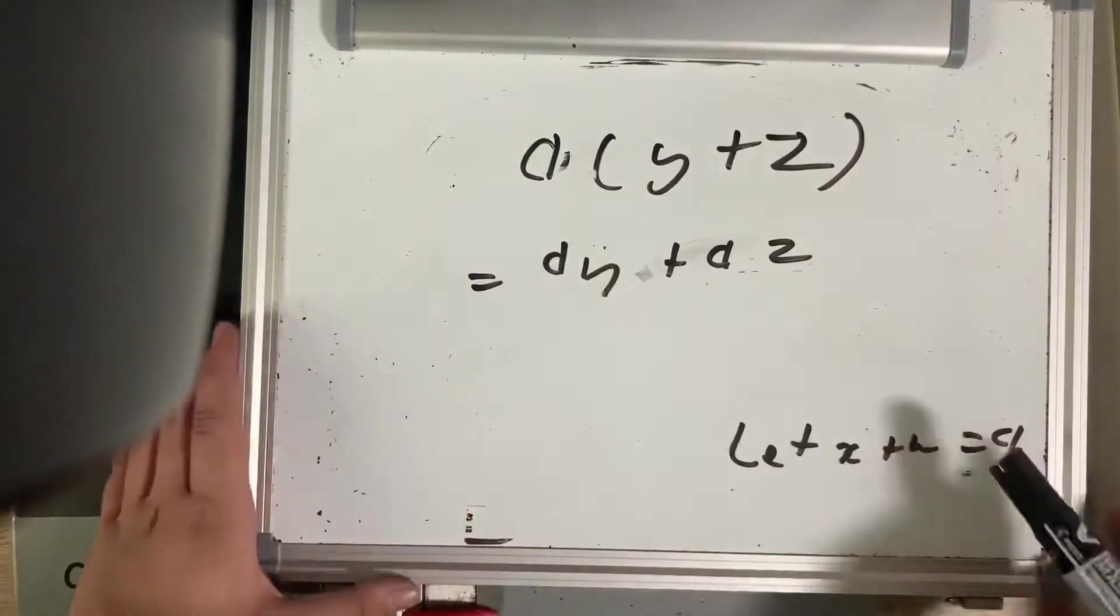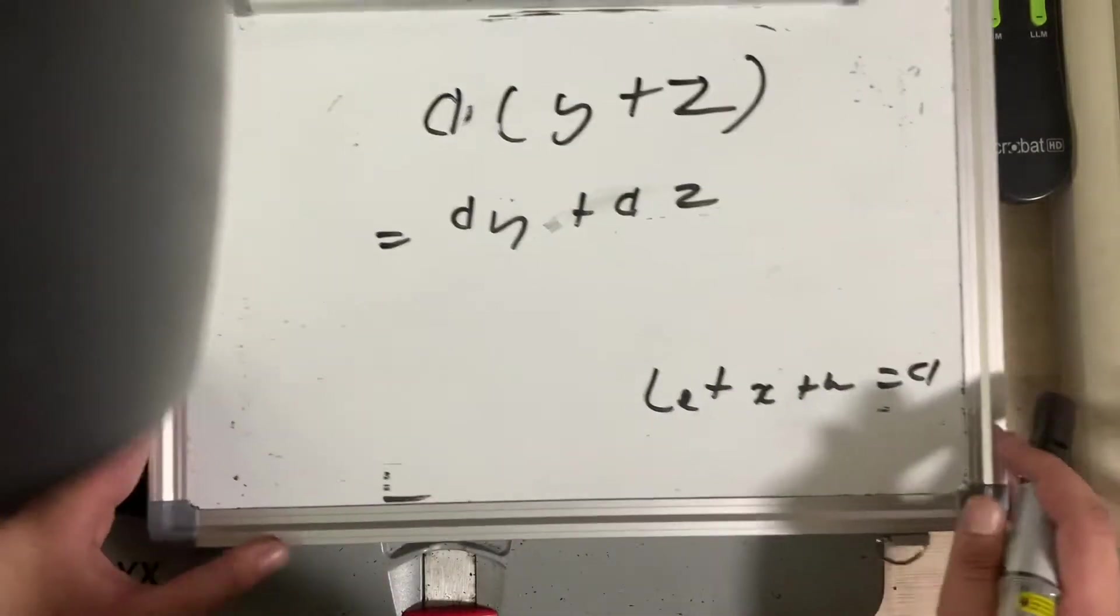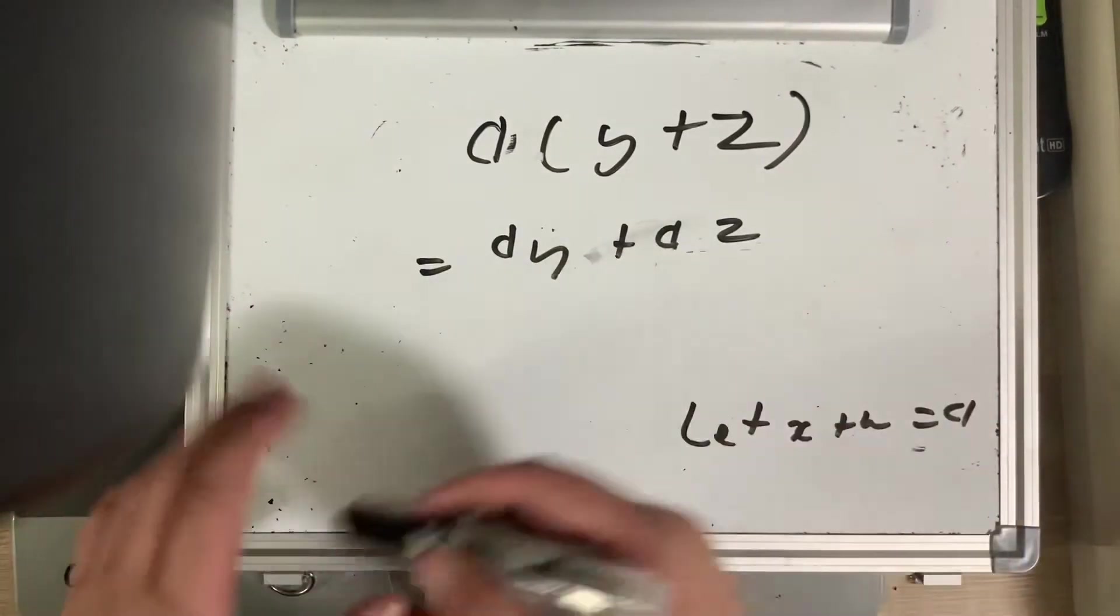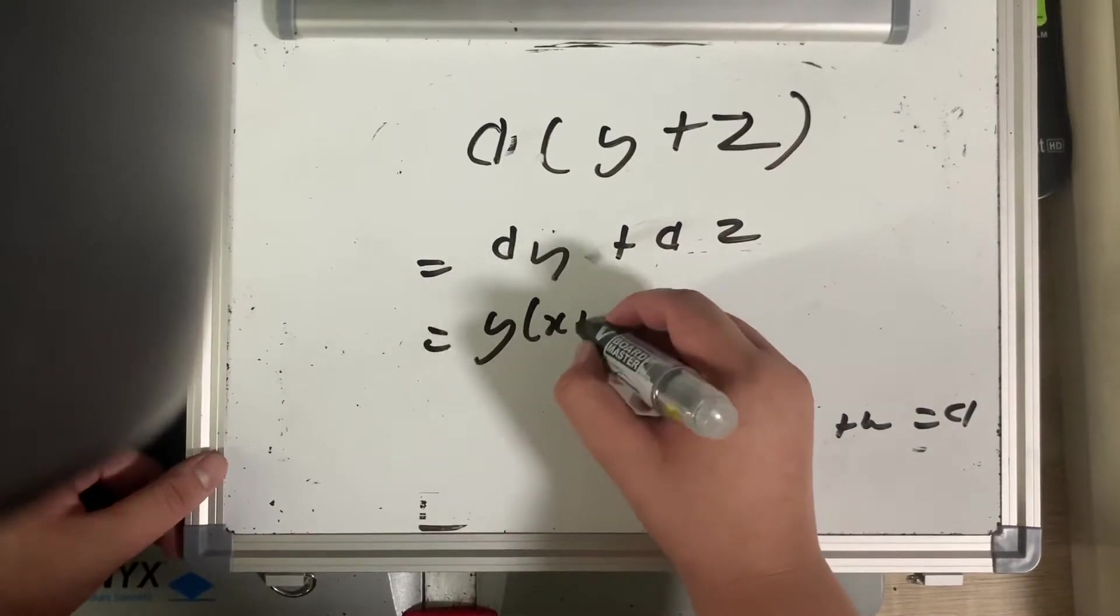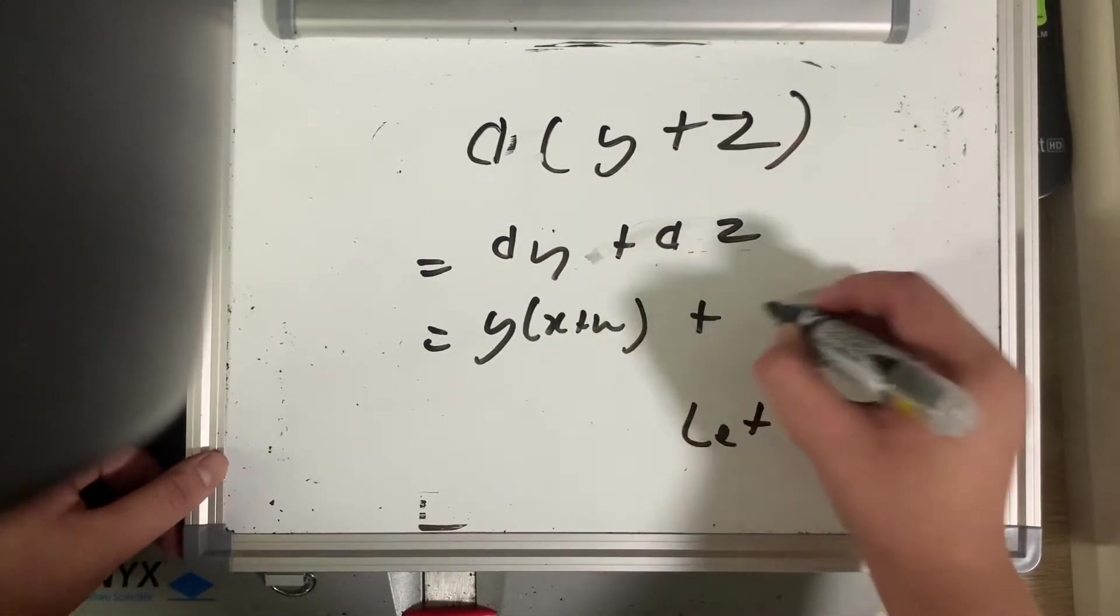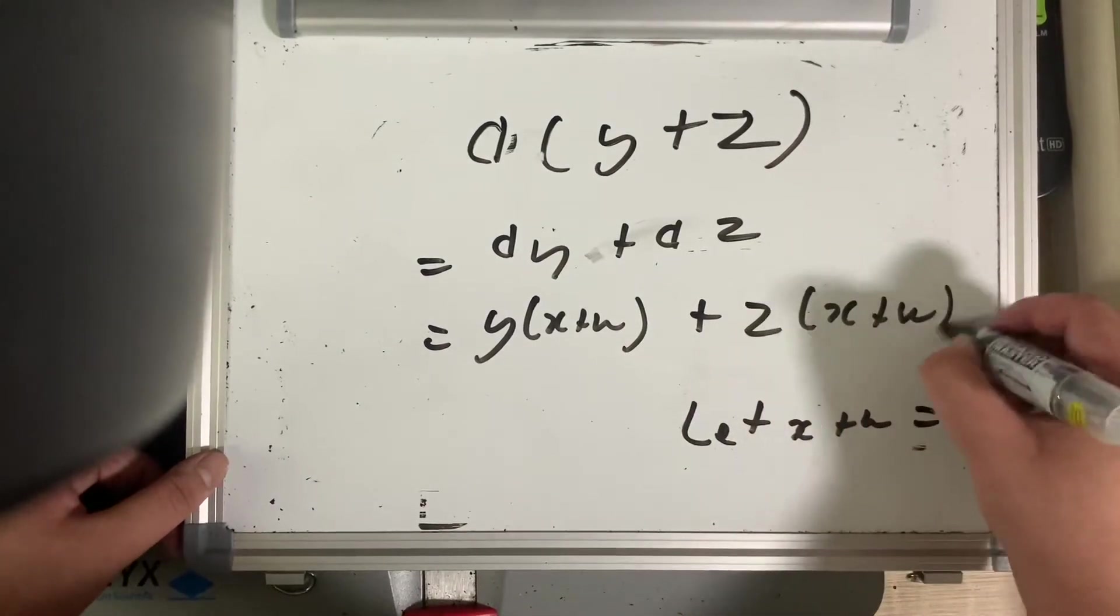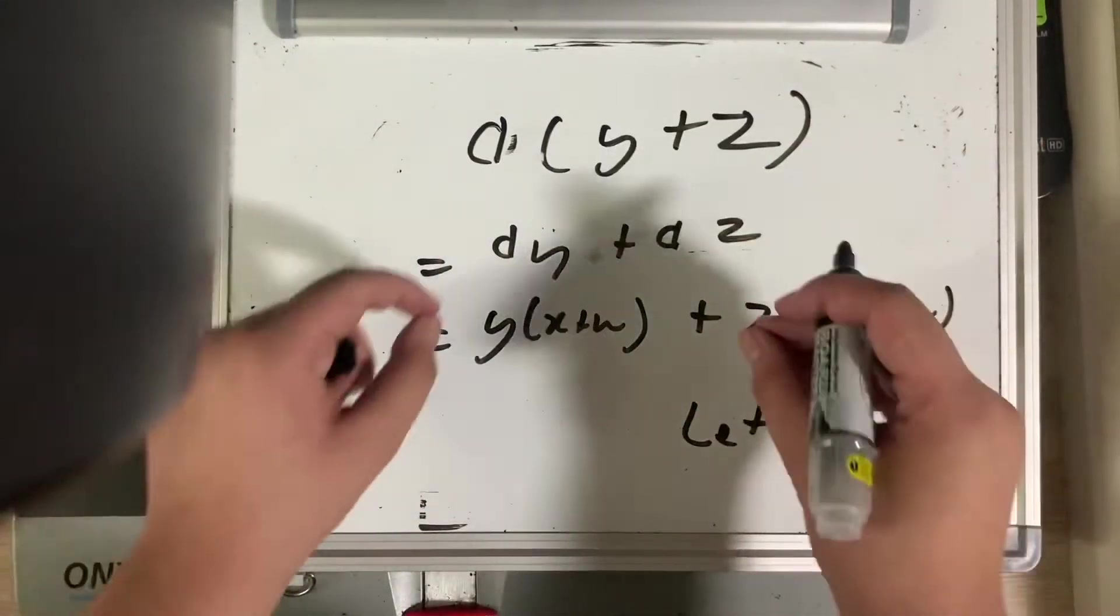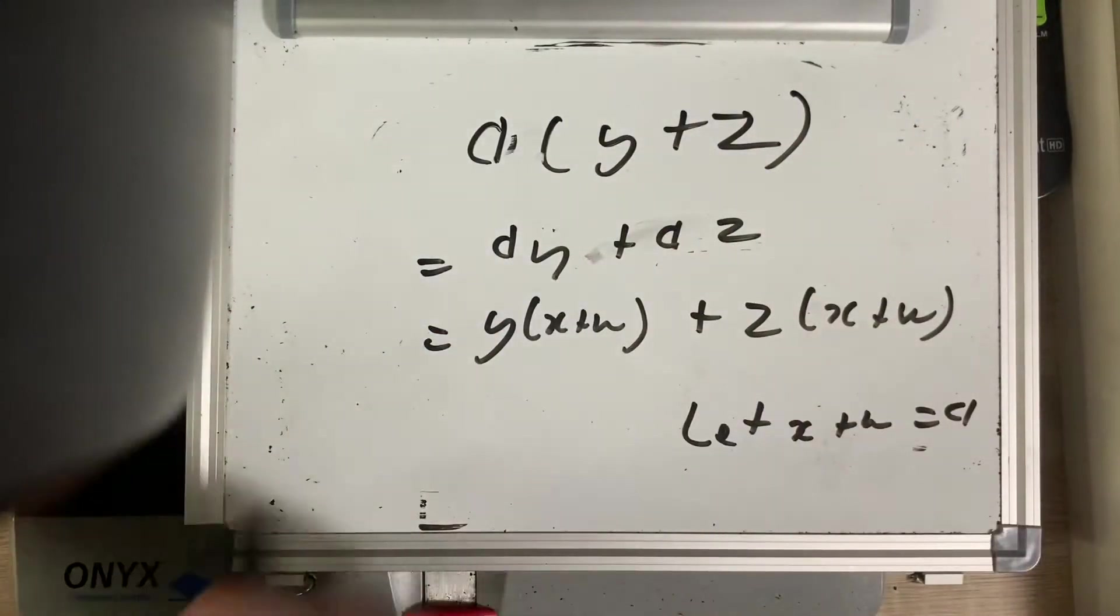Because a, let's recall, was actually x plus w, we can now substitute x plus w as a. We will end up getting y times x plus w plus z times x plus w. It's like, surprise, we're not actually a, we're x plus w in disguise. It's kind of like that.